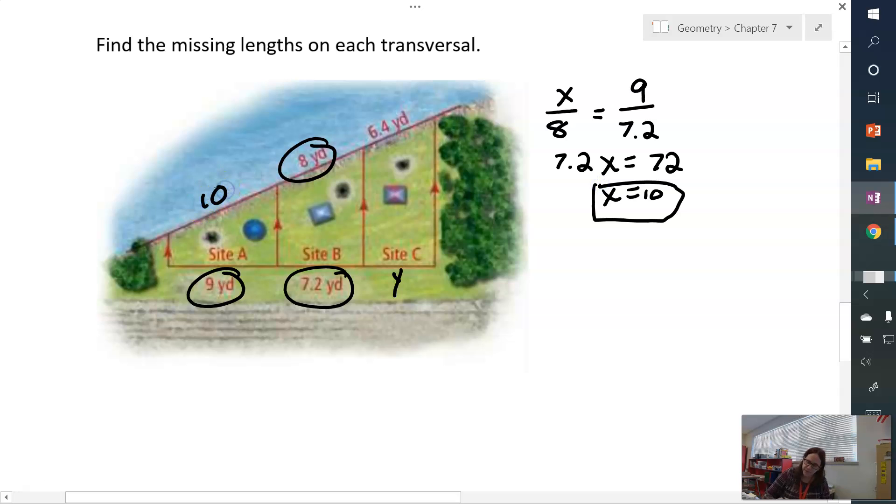Now, to solve for Y, I'm going to use the 6.4 because that maps with Y, and I've got 8 and 7.2. So just like before, I am going to do 6.4 over 8 is going to equal Y over 7.2. So just set up your proportion like we did before, and now let's cross multiply.